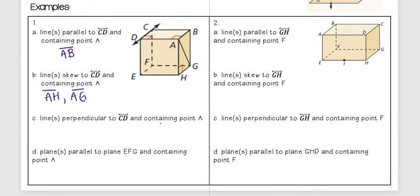Okay, and then I want to find lines perpendicular to CD and containing point A. And so I have point A, it needs to be perpendicular to it, so it's going to intersect CD at a right angle, and I see that happens right here.